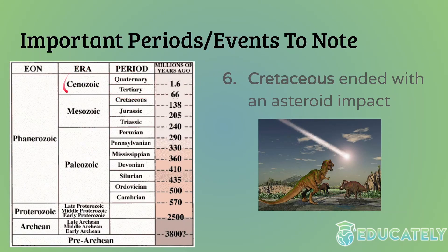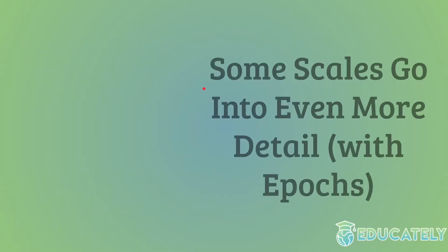The Cenozoic was dominated by mammals. The first mammals appeared around the Jurassic, but they weren't really dominant because dinosaurs preyed on them. But the Cenozoic is really where mammals started taking over. We're right now in the Quaternary period, which started around the time of the first humans.